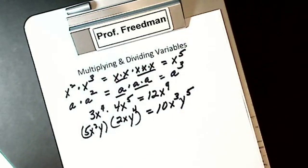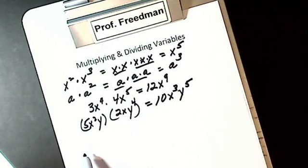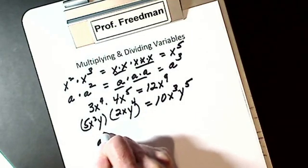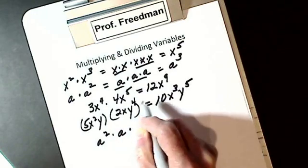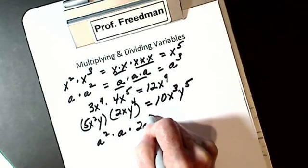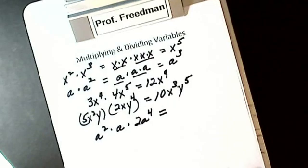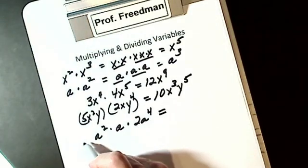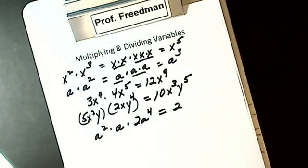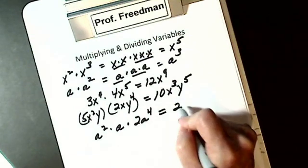I could have more than two factors. I could have something like this. Let's add a squared times a times 2a to the fourth. I just have to multiply my coefficients. 1 times 2 is 2. I add exponents.